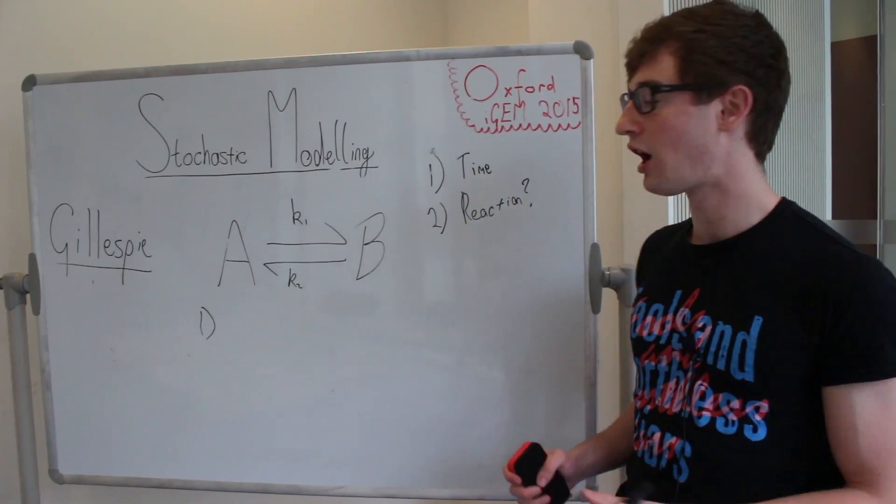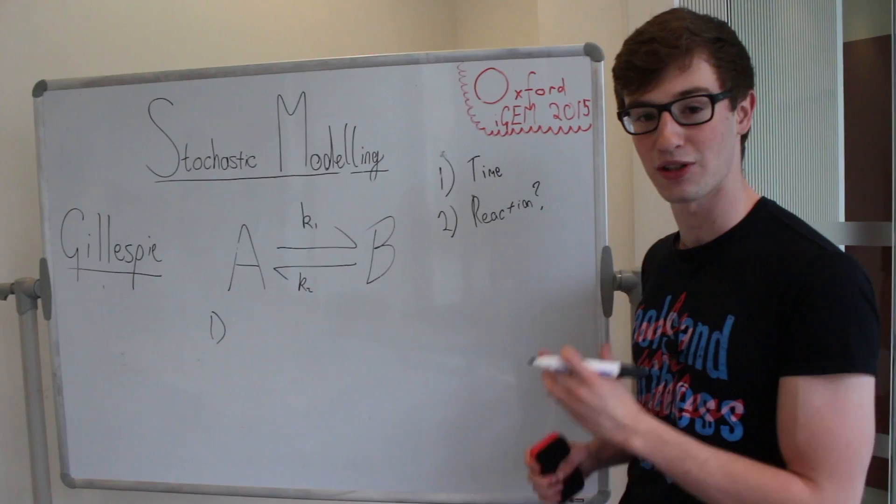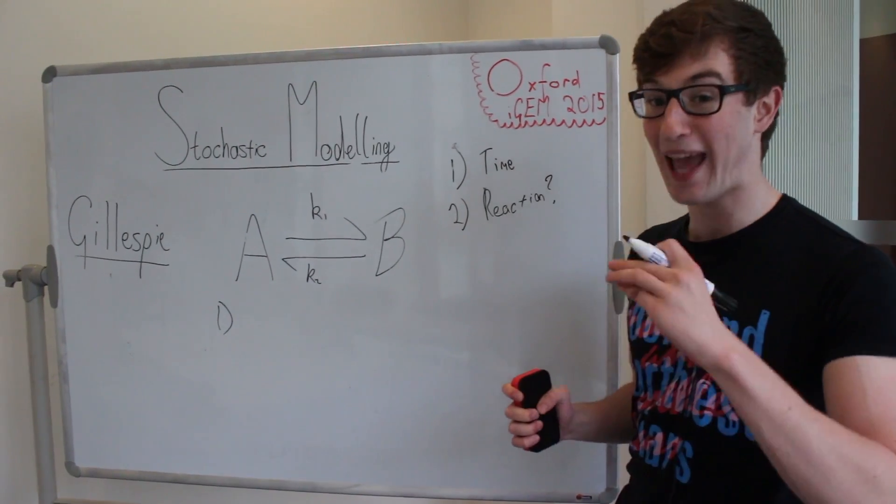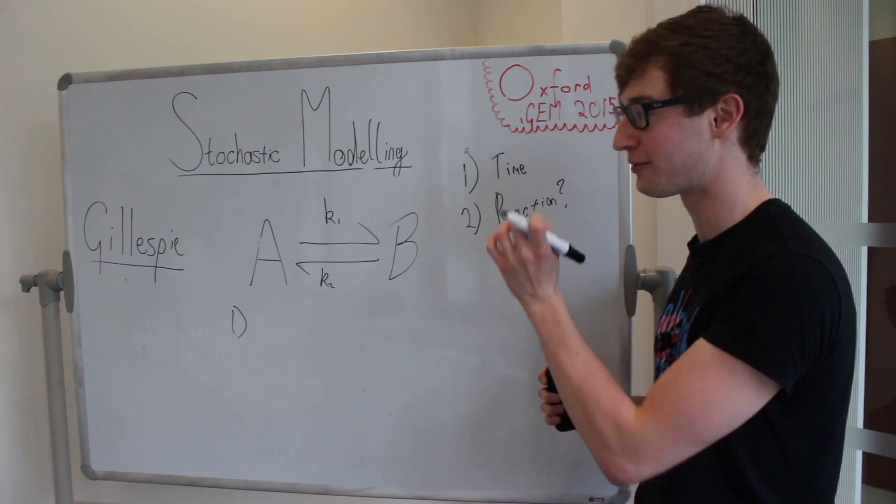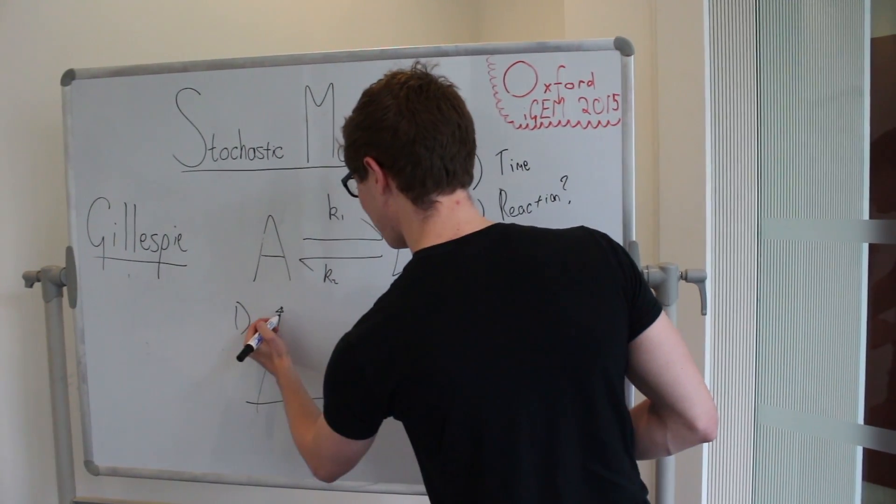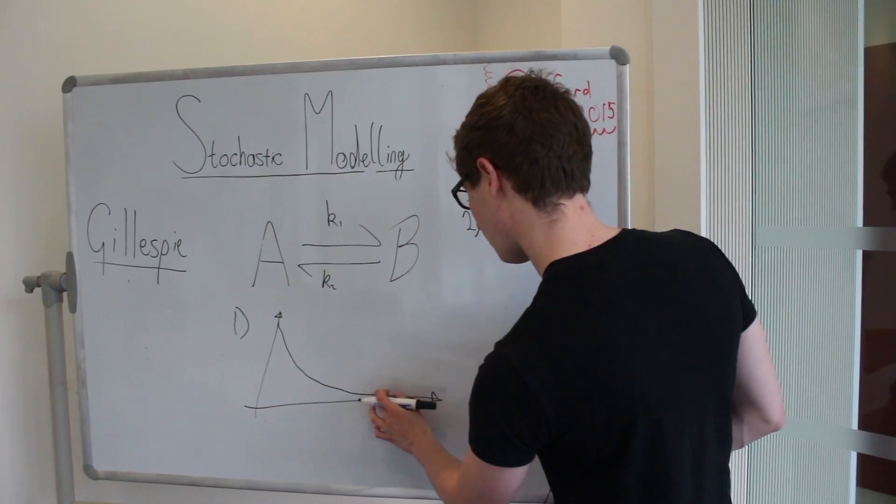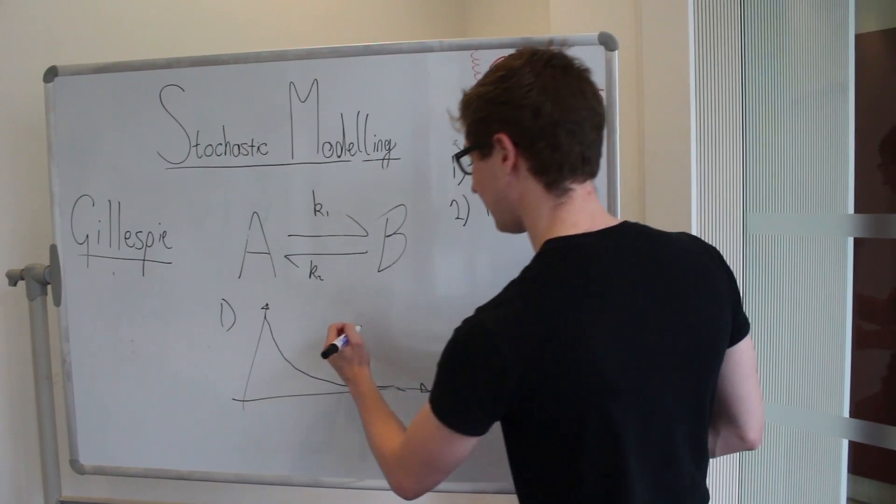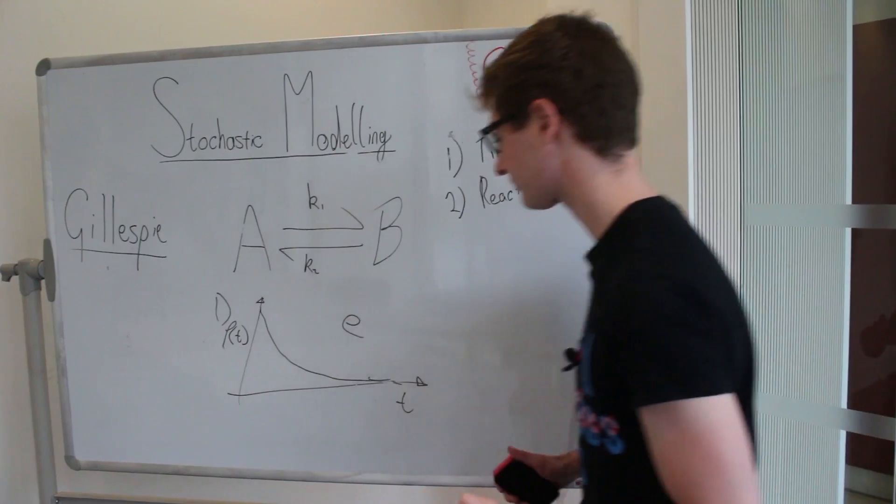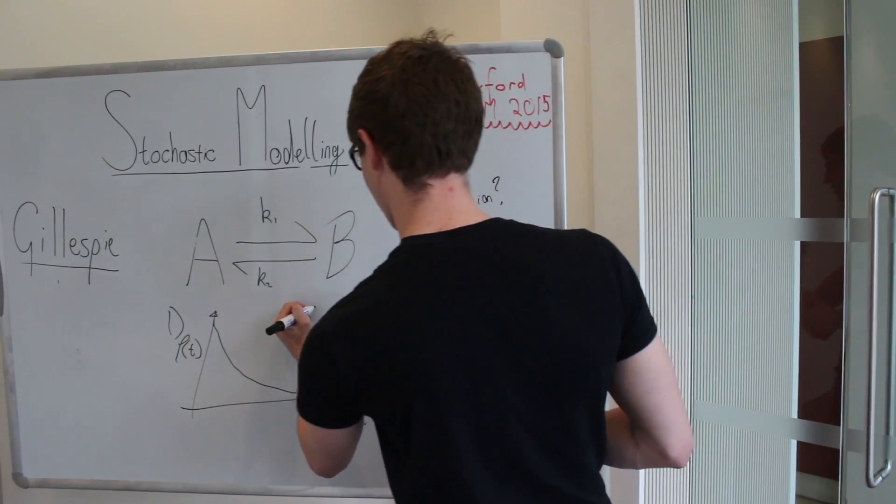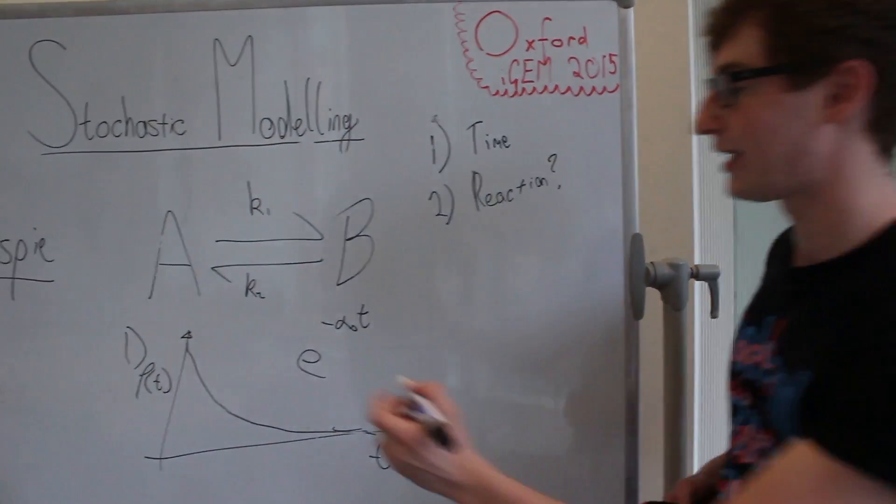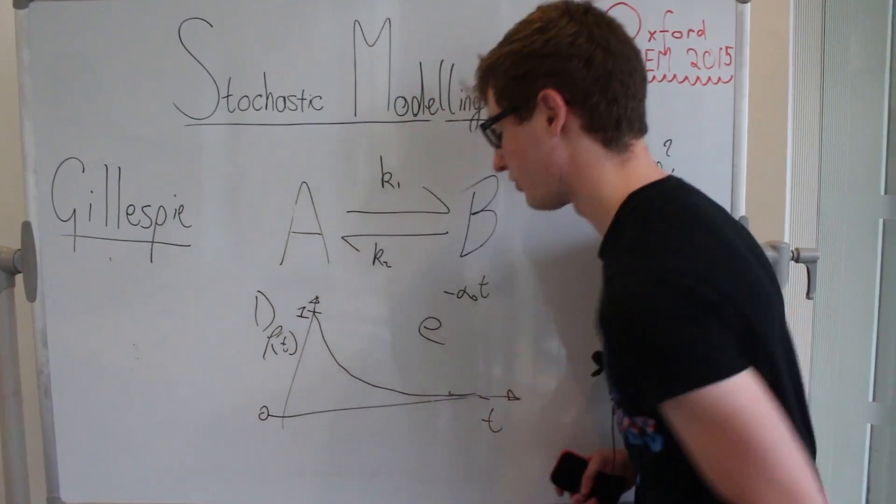And so to decide the time, what we do is we make an assumption about what the probability distribution of the times is going to look like. We say that it's going to be more likely for reactions to occur sooner than later. In fact it's going to be exponentially difficult to find a reaction that happens at really late times compared to the previous one. So we say that the probability of a reaction happening in a certain time falls asymptotically to zero. And we can even write the form of this, so if I write t and probability of reaction p of t, we can write the form of this as e to the minus something I've called alpha naught times the time. And of course this will intercept at one and asymptotically approach zero.